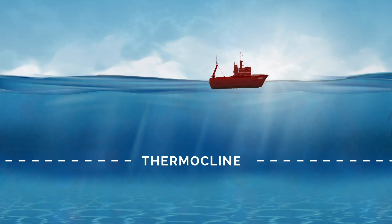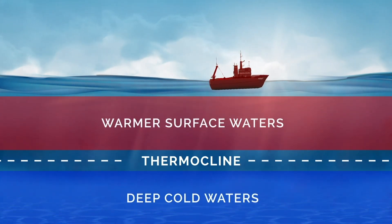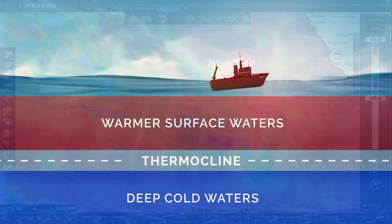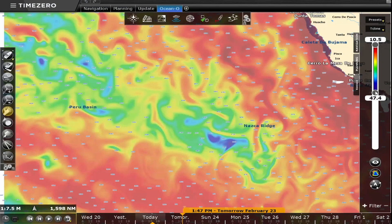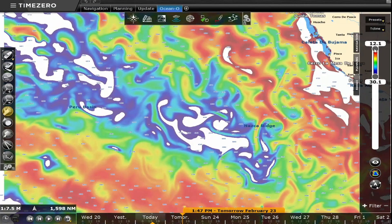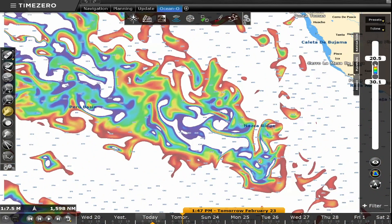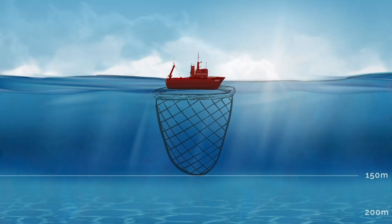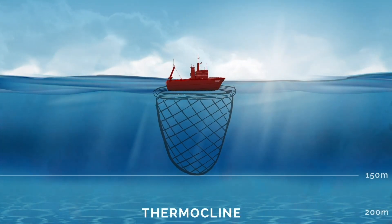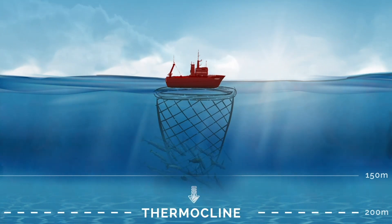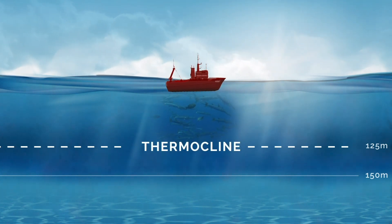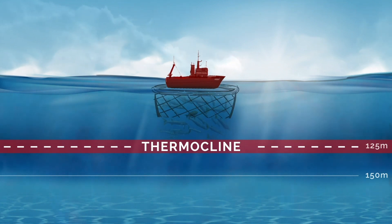Thermocline. The thermocline is the boundary between the deep cold waters and the warmer surface waters. In this zone, significant temperature variations are observed according to the depth. TZ Professional uses a unique calculation algorithm to display thermocline information. The thermocline acts as an insurmountable barrier and varies with depth. If your seine goes down to 150 meters of depth and the thermocline is at 200 meters, the fish can escape by the bottom. Whereas, if the thermocline is at 125 meters, they will be blocked by this natural barrier and will remain in your net.